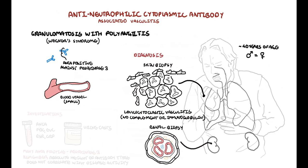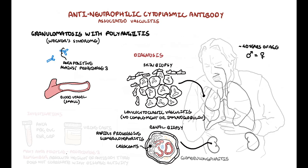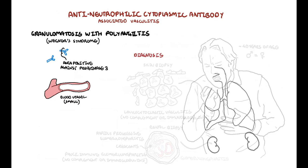Granulomatosis with polyangiitis is an ANCA-associated glomerulonephritis that can lead to rapidly progressive glomerulonephritis, where there is a rapid decline in renal function over a short period of time with pathological findings of extensive glomerulonephritis. On kidney biopsy, there is little complement and immunoglobulin, meaning a pauci-immune glomerulonephritis. Pauci-immune means there is only minimal immunoglobulin deposition on immunofluorescence. Where a biopsy is not feasible, diagnosis is usually made on clinical findings, presence of ANCA, or radiological findings.